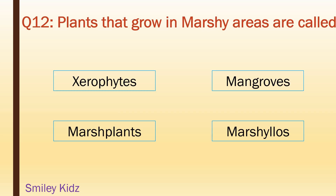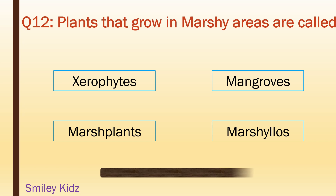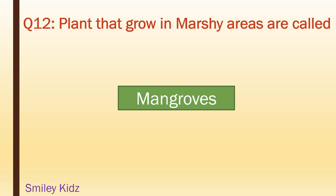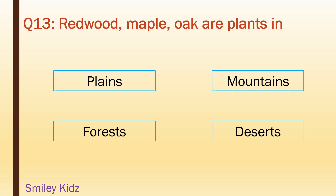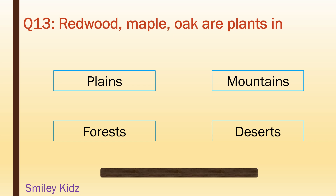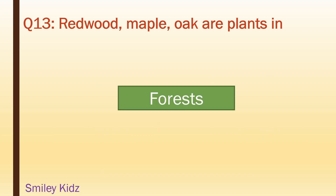The plants that grow in marshy areas are called: xerophytes, mangroves, marsh plants, marsh plants. Your time starts now. Your time is up. And the right answer is mangroves.